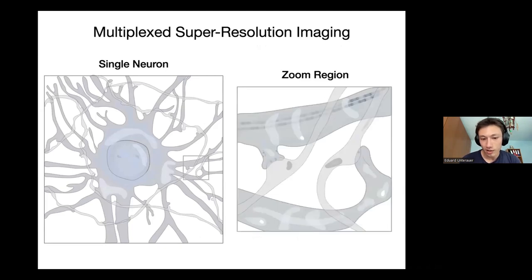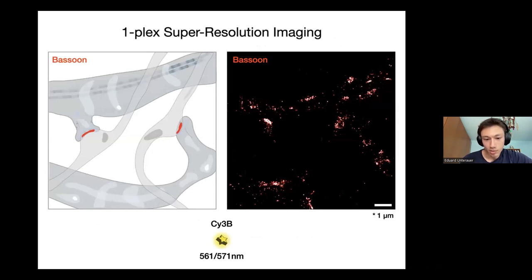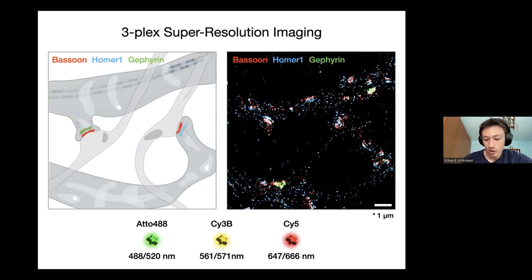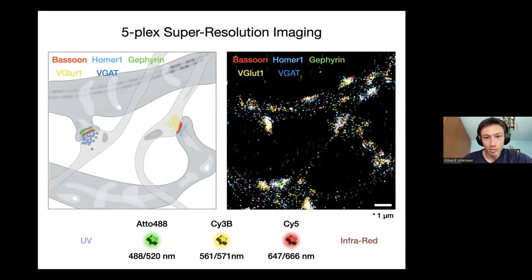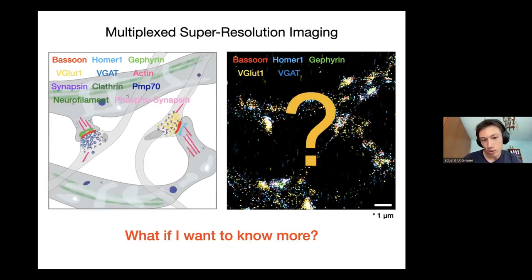Now let's go into multiplexing. Here's an example of a single neuron — let's assume you want to do one-plex super-resolution imaging for scaffold protein Bassoon, using Cy3B which is the best dye in the green wavelength. If you want to image two targets you add another dye, say Cy5, but you've now used two wavelengths. Continuing this approach, with five targets you have almost entirely covered the available spectrum — not to mention dyes don't all perform equally. What if you want to image all the targets actually present in the structure?